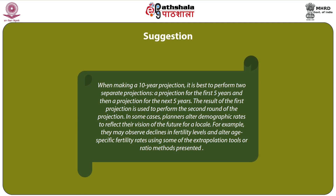There are major suggestions provided when making 10-year projections. It is best to perform two separate projections: a projection for the first five years and then a projection for the next five years. The result of the first projection is used to perform the second round. In some cases, planners alter demographic rates to reflect their vision of the future for a locale — for example, they may observe declines in fertility levels and alter age-specific fertility rates by using extrapolation tools or ratio methods.